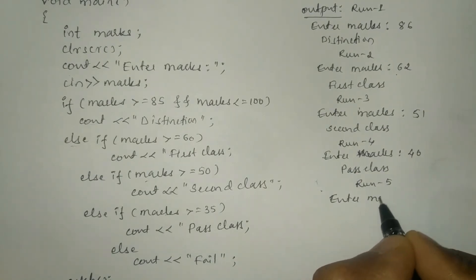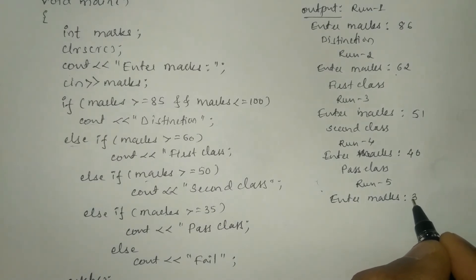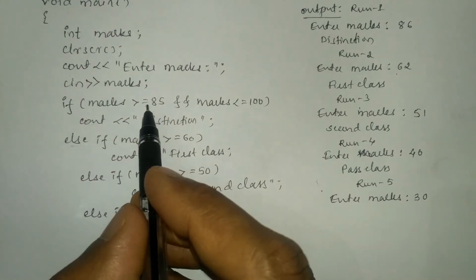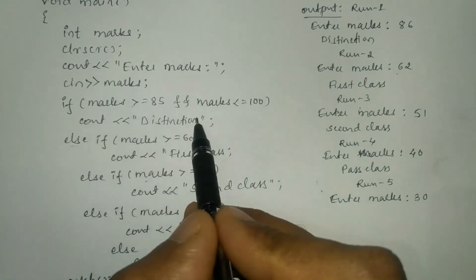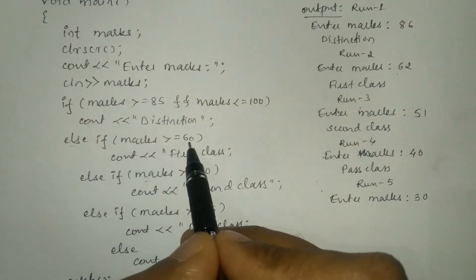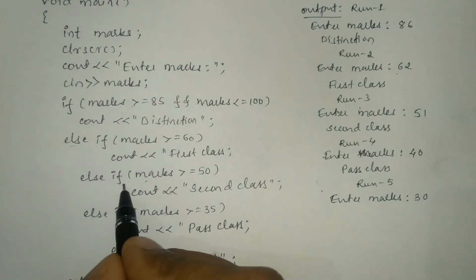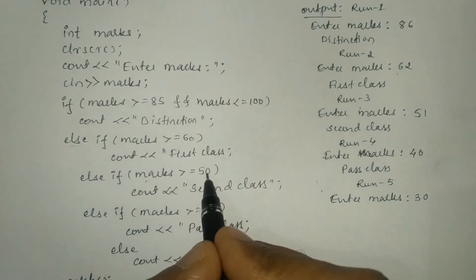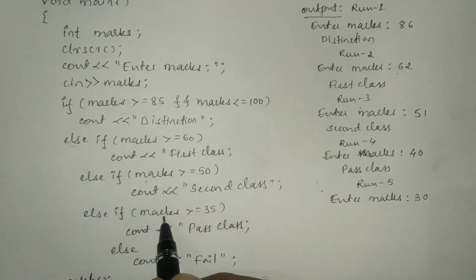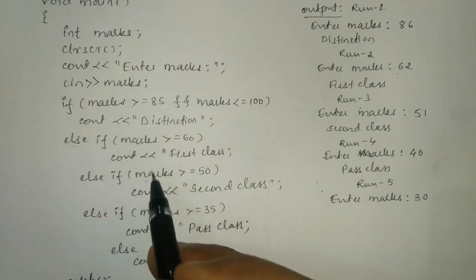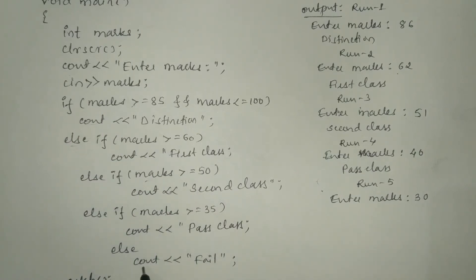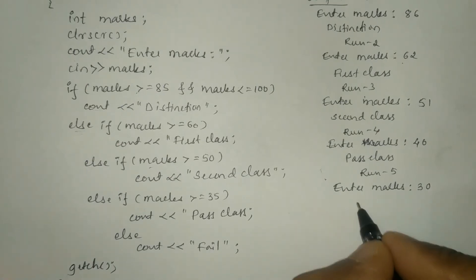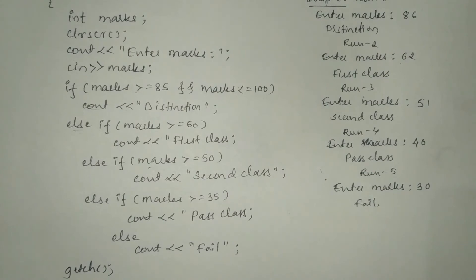Run 5: again it asks the user to enter marks, and this time I am going to enter 30. 30 is greater than or equal to 85 — no, false. 30 is less than or equal to 100 — true. False AND true is false, so distinction will not print. 30 is greater than or equal to 60 — no, false. 30 is greater than or equal to 50 — no, fails. 30 is greater than or equal to 35 — no, condition fails. Since all conditions return false, it is going to print the else default statement which prints 'fail'.